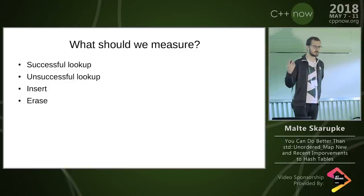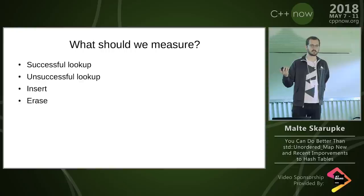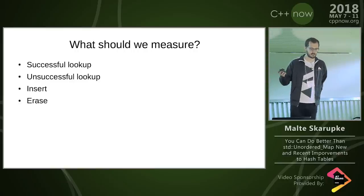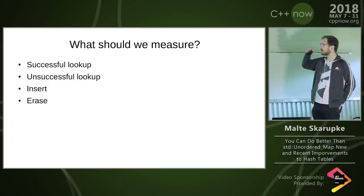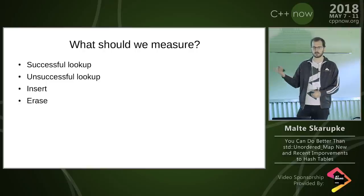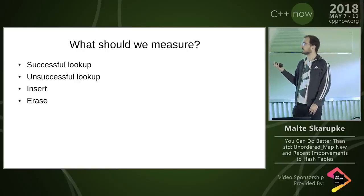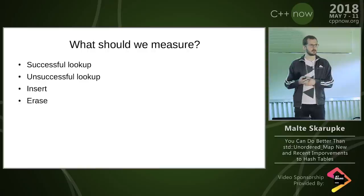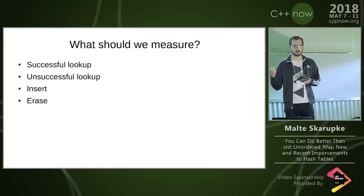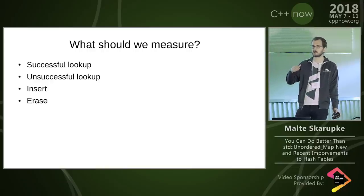When measuring hash tables there are four things to measure: successful lookups (looking up a key that's in the map), unsuccessful lookups (looking up a key that's not in the map, returning end), inserts, and erase. There's a hierarchy: successful and unsuccessful lookups are most important. Inserts are less important because you do fewer inserts than lookups. Erase is least important. We want to make lookups as fast as possible first, then inserts — but not at the expense of lookups — then erase.